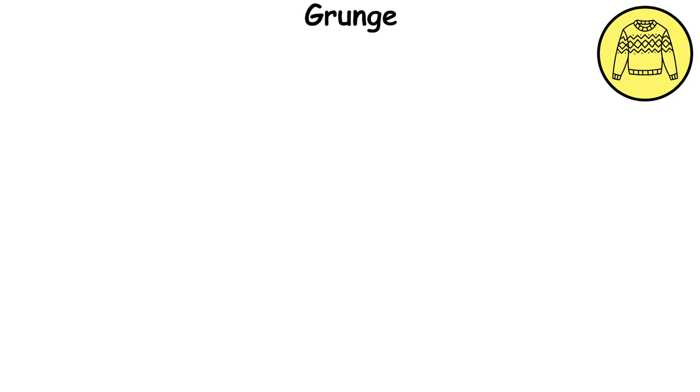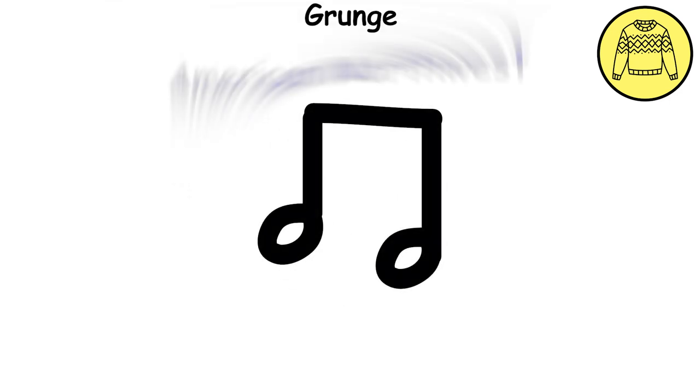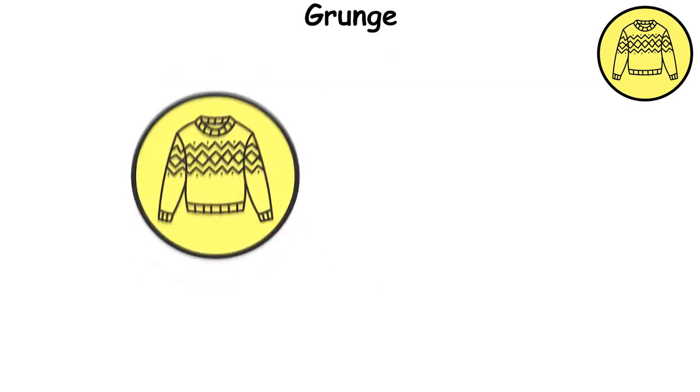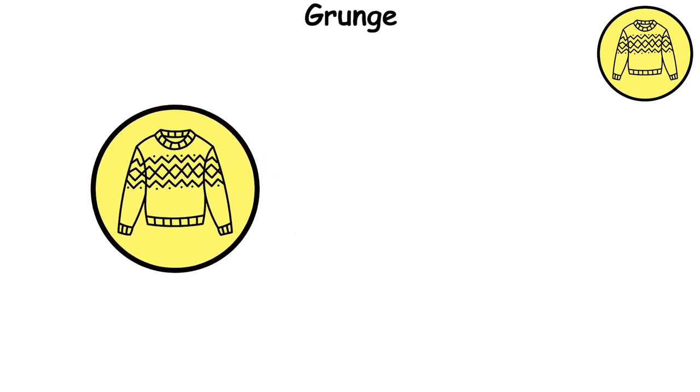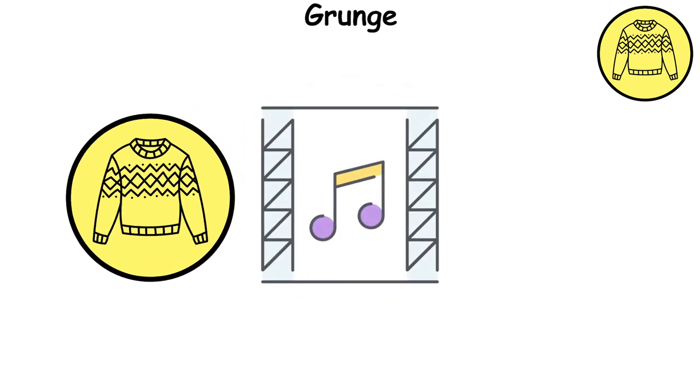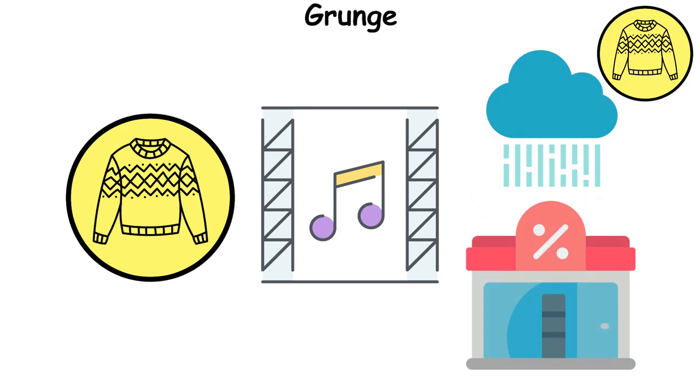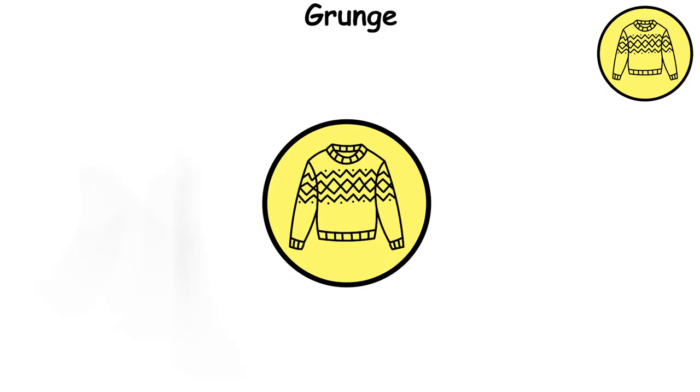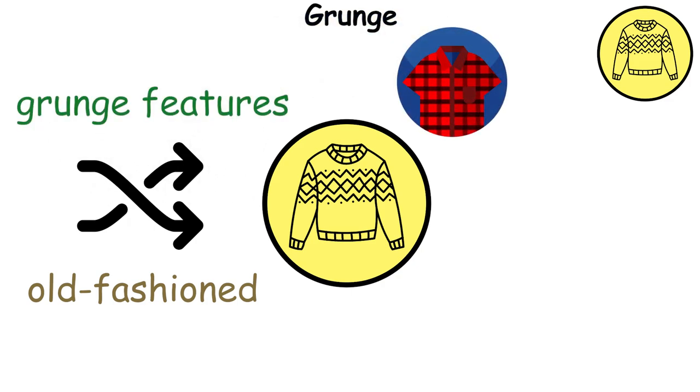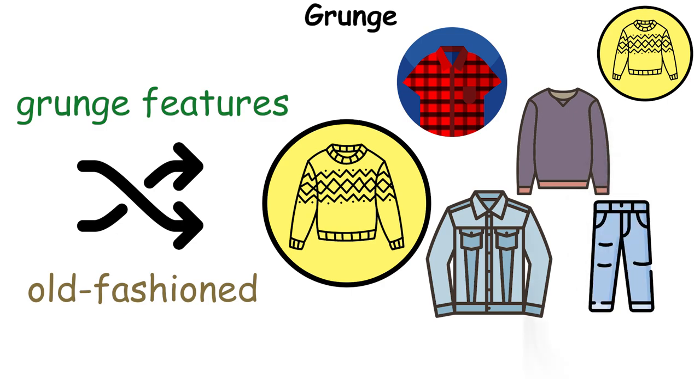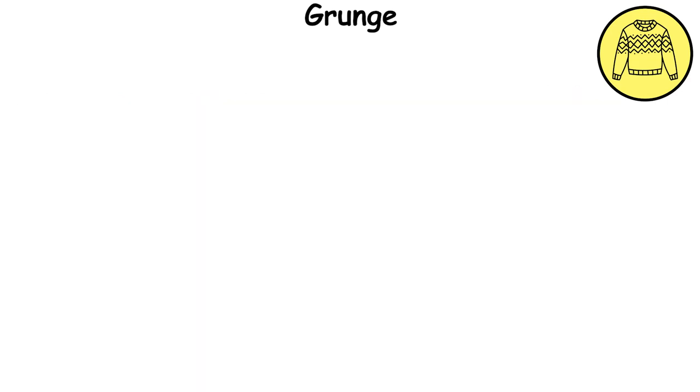Grunge style originated from the grunge music movement that swept the American Northwest in the early 1990s. It was a style that didn't reject fashion, but rather ignored it. The look was defined by the insularity of the scene in Seattle, a city known for its rain and thrift shops. The grunge look is characterized by a mix of old-fashioned and grunge features, such as vintage flannel shirts, oversized sweaters, denim jackets, ripped jeans, and combat boots.